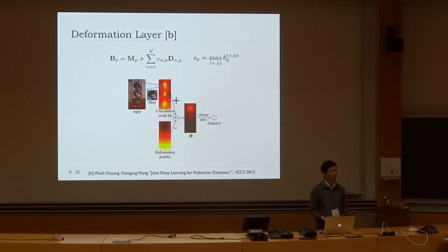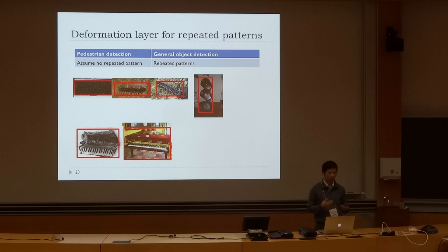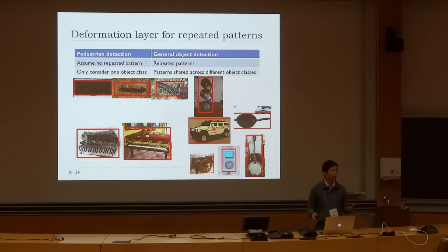We have prior work on learning deformation for pedestrian detection, presented at last year's ICCV. However, in this challenge, there are more difficult problems. For pedestrian detection, we don't assume repeated patterns, but for object detection there are many repeated patterns — for example, the keys on a keyboard and the light bulbs in traffic lights. Also, pedestrian detection considers just one class, whereas here we have a large number of classes and must consider shared patterns across them.